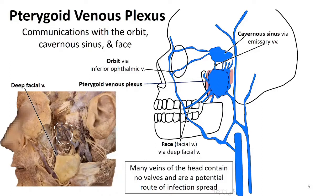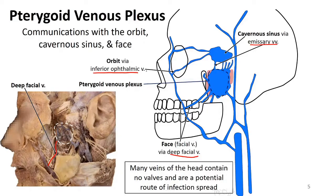What we see here is that there are communications through veins called emissary veins with the cavernous sinus. Also, the face communicates through the deep facial vein, which we can see coursing here between the facial vein and the pterygoid venous plexus. There's also an indirect communication through the inferior ophthalmic vein, which connects to both the cavernous sinus and the facial vein.